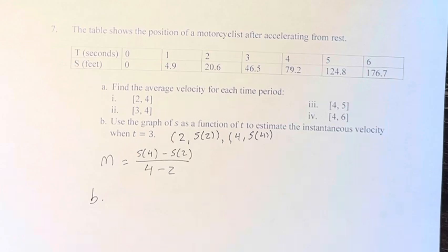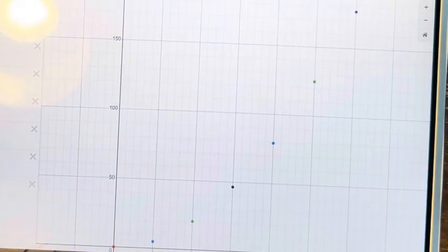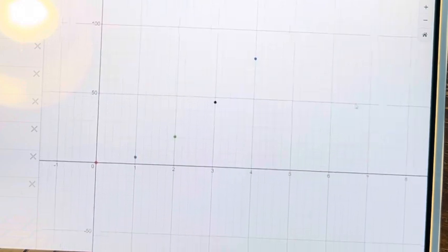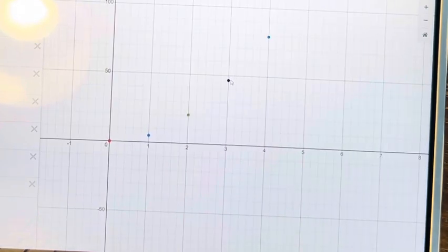So I've plotted these points in Desmos. We can see them right here. And specifically, we want to focus on this black point right here, because that's at 3.